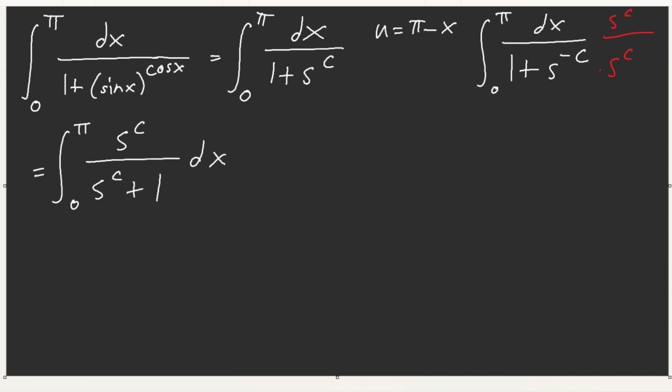Would you look at that though? We have this formation and this formation. So if we add these two integrals together, what do you get? You get sine to the power of cosine plus one, which is what we have at the bottom as well. They cancel out. So this is one. So our answer is pi over two.